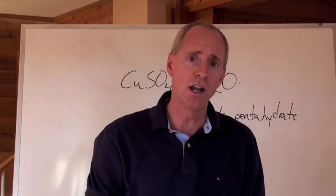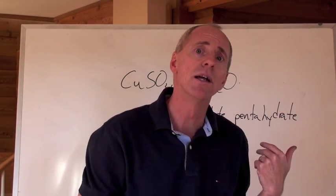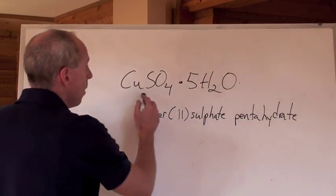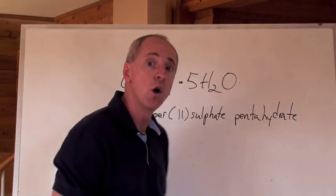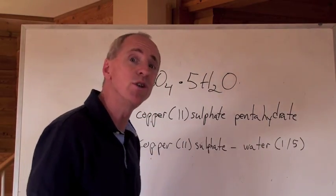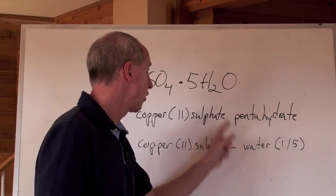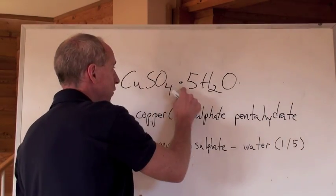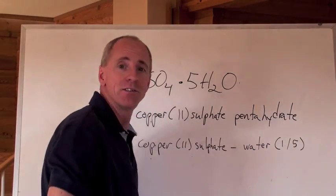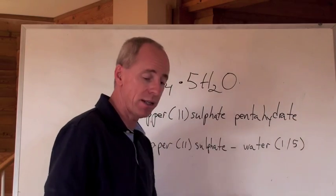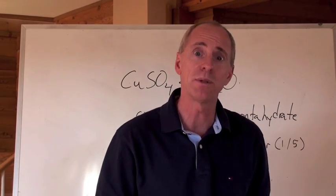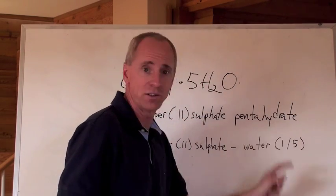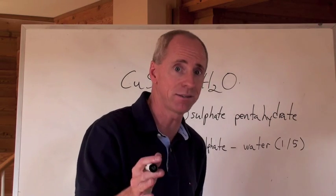There is another way of naming that chemical, and you'll see both methods being used. This can be called copper(II) sulfate pentahydrate, or copper(II) sulfate-water (1/5), which means there's one copper(II) sulfate for every 5 waters. I'll bet you anything that's what your teacher calls it, because your teacher learned from another teacher who always used this system, which is the older system, still acceptable.